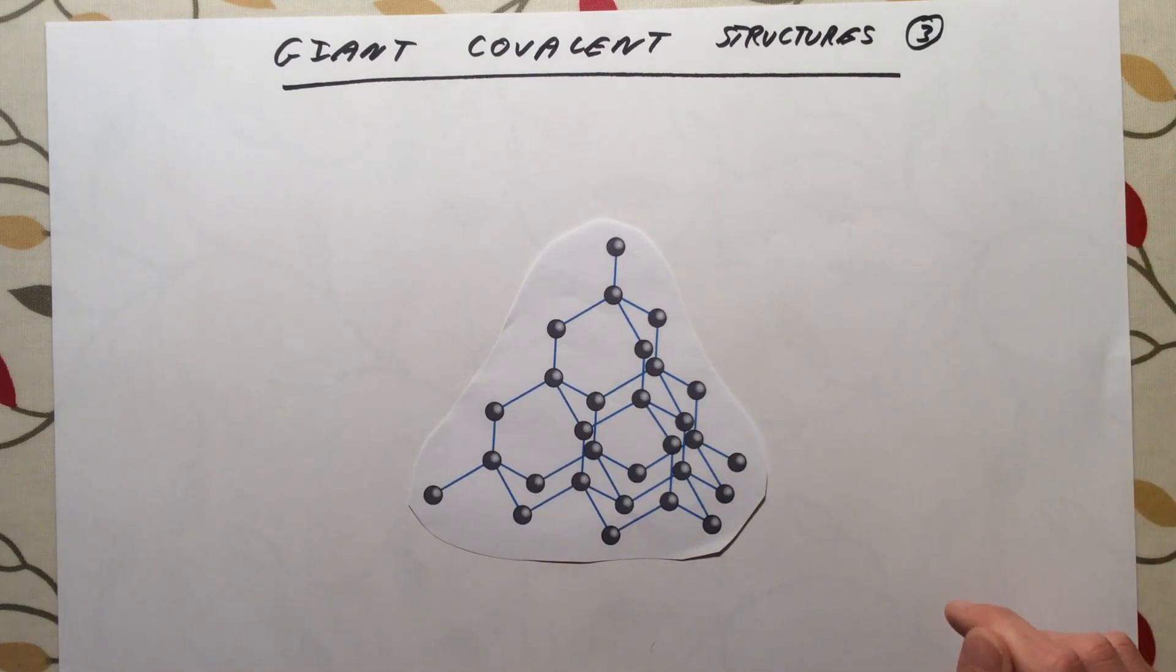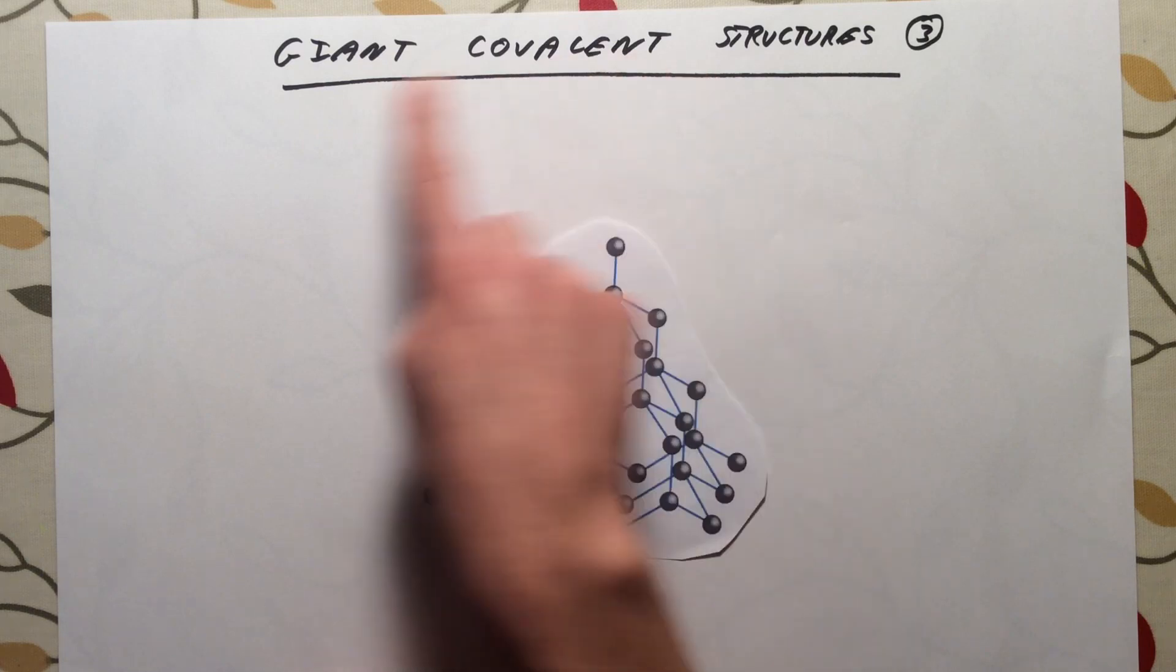We could have a million carbon atoms in a diamond. We could have 10 billion. We just can't say how many there are. Therefore it is a giant or an extended covalent structure.